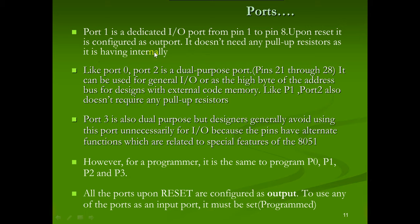Port 2 is a dual-purpose port (pins 21–28): it can be used for general-purpose I/O or as the high byte of the address bus for external code memory. Like Port 1, Port 2 does not require a pull-up resistor. Port 3 is also dual-purpose but designers generally avoid using it unnecessarily as I/O because its pins have alternate functions related to special features.